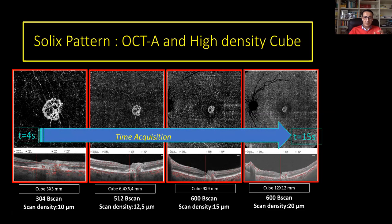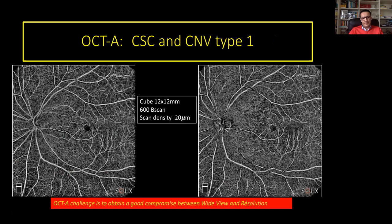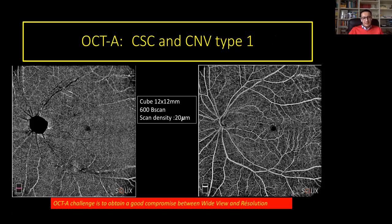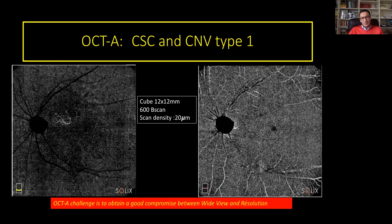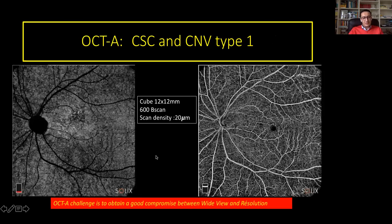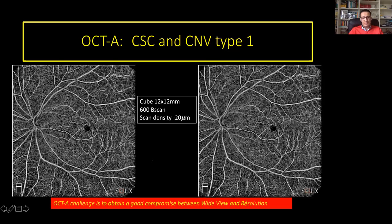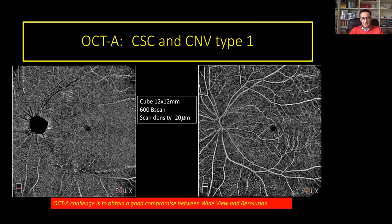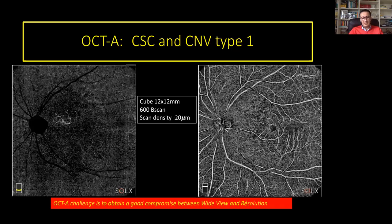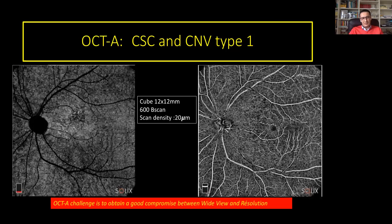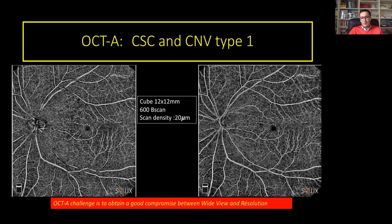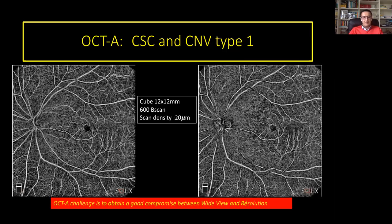One important thing is to have a very short acquisition time to include this technology in daily clinical practice and also for patient comfort. With very high scan density and a wide cube, you can also detect the presence of CNV, as in this case of a chronic CSC complicated with type 1 CNV. Indeed, OCTA challenges obtaining a very good compromise between wide field of view and resolution.